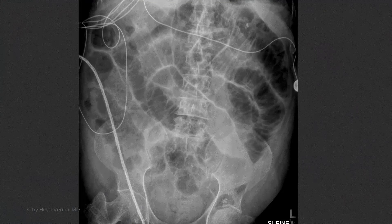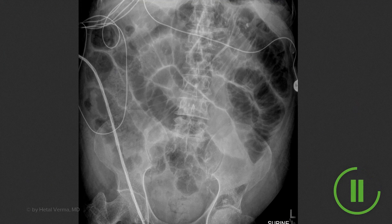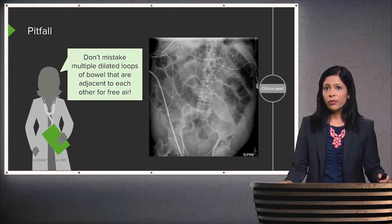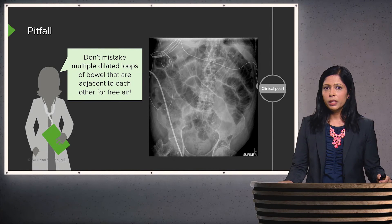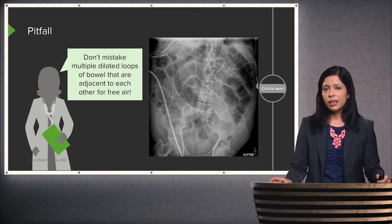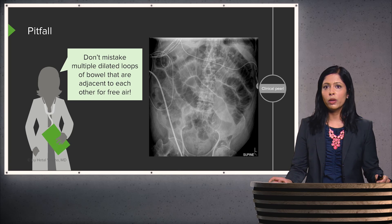An important pitfall is not to mistake multiple dilated loops of bowel adjacent to each other for free air. This patient has multiple dilated loops of bowel, likely representing small bowel obstruction. You can see bowel wall adjacent to air within the bowel, which could be mistaken for the Riggler sign. If there is any confusion, the next step is to perform a CT to determine if there is truly free air or whether this represents small bowel obstruction.